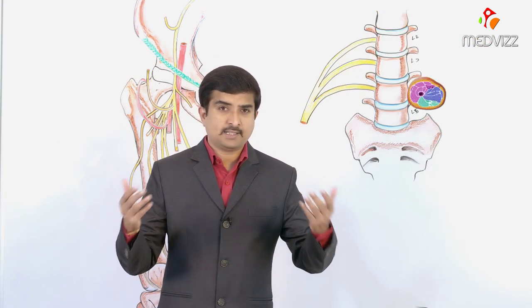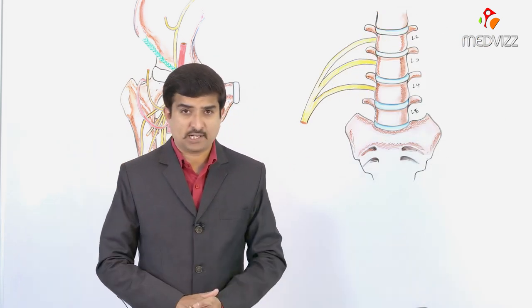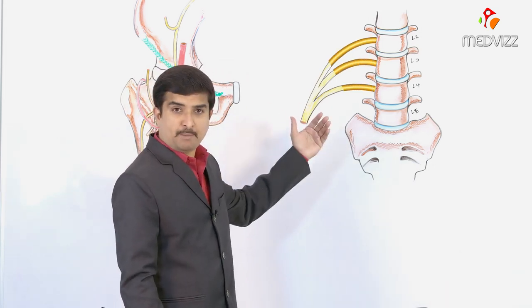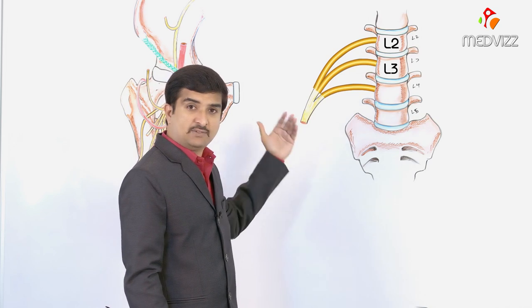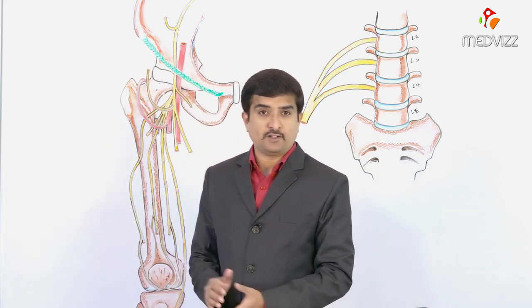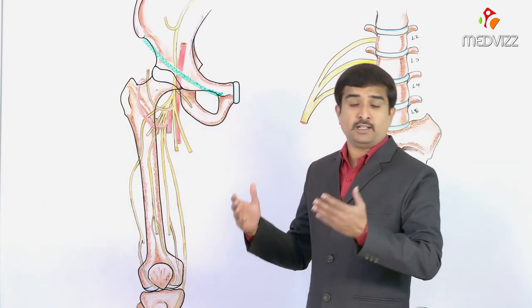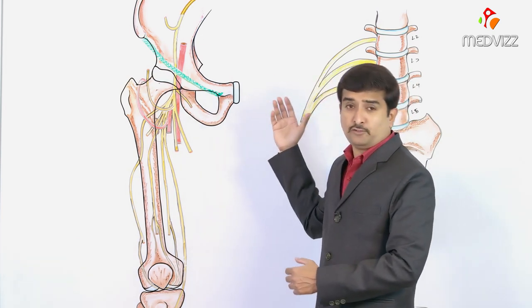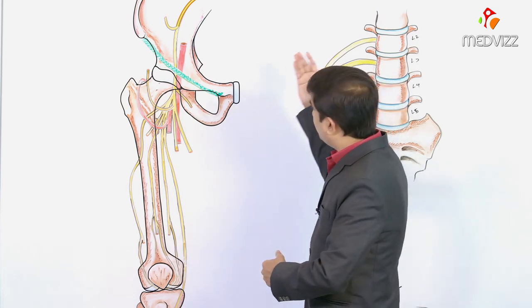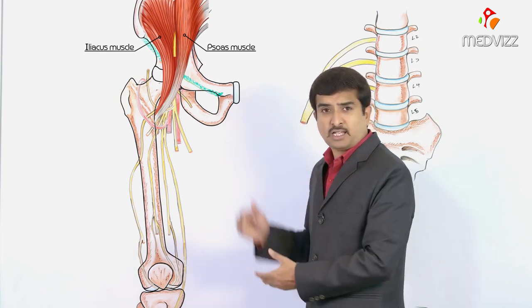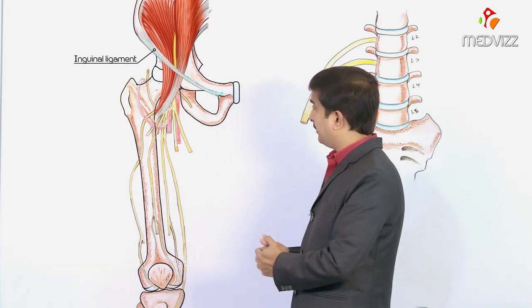The femoral nerve arises from the dorsal divisions of the anterior rami of L2, L3, and L4 nerves within the psoas major muscle. After emerging from the lumbar plexus, it emerges from the lateral border of the psoas major and passes between the psoas major and iliacus muscle.